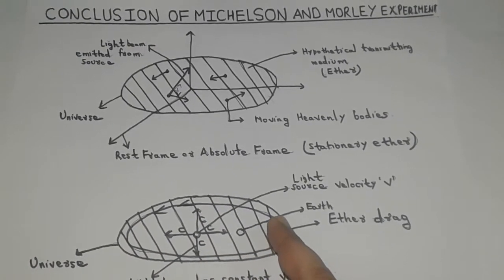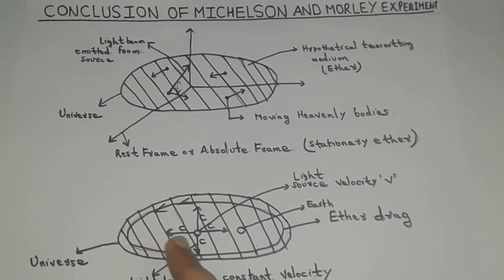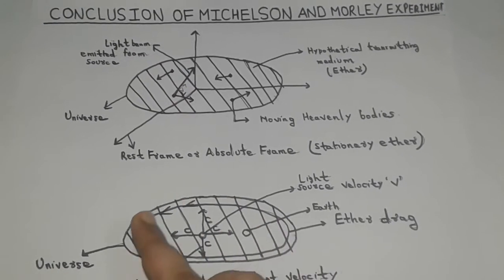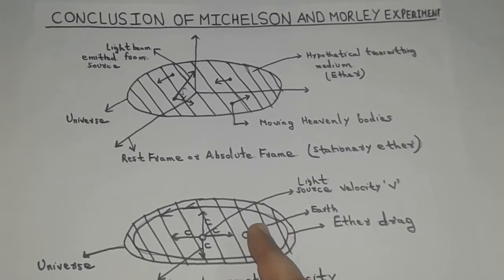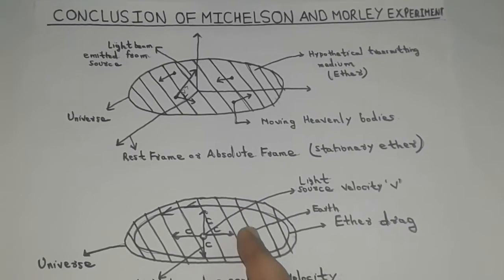Based on the interpretation of the results obtained from the experiment, it was concluded that ether is not stationary. Rather, it moves with the earth, such that there is no relative motion between the ether and the earth.